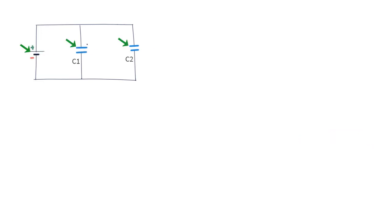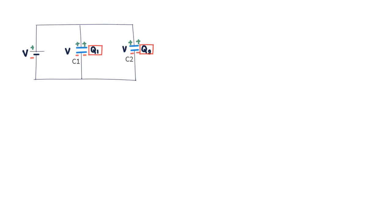Now let us understand how capacitors connected in parallel behave. In a parallel setup, the upper plates of both C1 and C2 are connected to the positive terminal of the battery, giving each plate the same positive potential — they are equipotential. Likewise, the lower plates are at the same potential as the negative terminal of the battery. So in parallel, each capacitor has the same potential difference, but the charges Q1 and Q2 on the capacitors are not the same. The positive terminal of the battery draws different quantities of electrons from each upper plate, such that total charge Q = Q1 + Q2, and an equivalent negative charge accumulates on the lower plates.